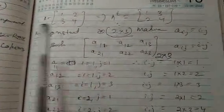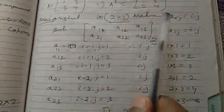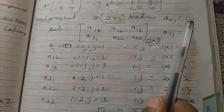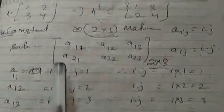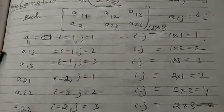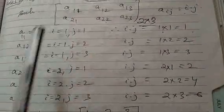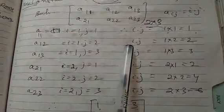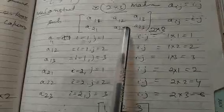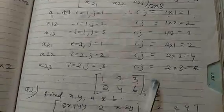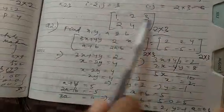Now, some problems. You have to obtain a matrix of order 2 into 3 such that aij is equal to i into j. Since 2 into 3 is the order, the elements are a11, a12, a13, a21, a22, a23. Taking i equal to 1 and j equal to 1, 2, 3, and i equal to 2 with j equal to 1, 2, 3, you get: 1×1=1, 1×2=2, 1×3=3, 2×1=2, 2×2=4, 2×3=6. Therefore, the 2 into 3 matrix has elements 1, 2, 3, 2, 4, 6.